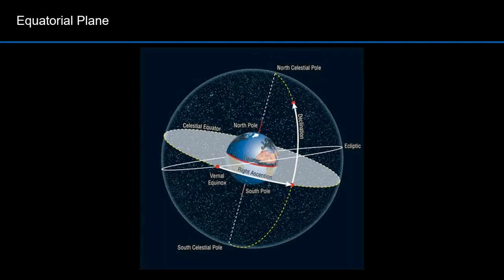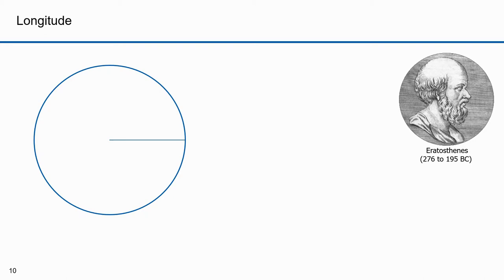Going back to our celestial sphere diagram, I've just explained the celestial equator and the plane of the ecliptic. Next, I want to define right ascension and declination. I talked about Eratosthenes in part 4 — he determined the circumference of the Earth and also developed the system of latitudes and longitudes we use to specify locations on the Earth.